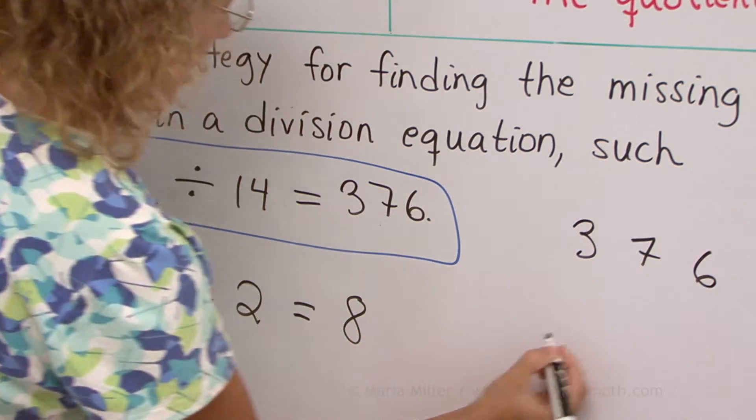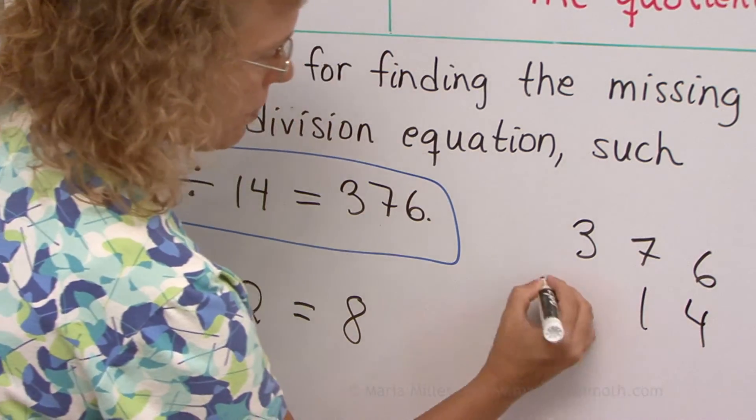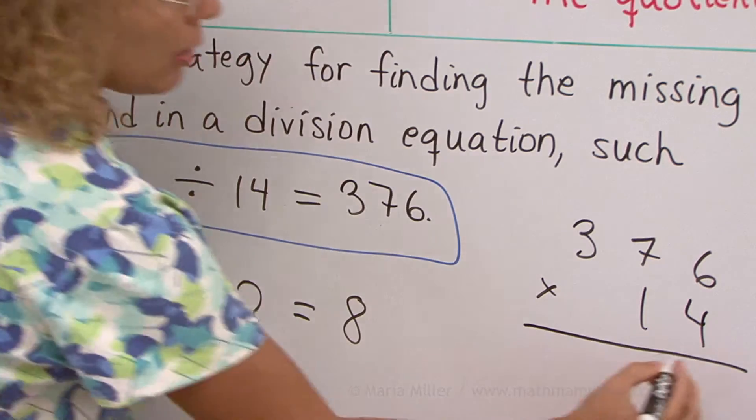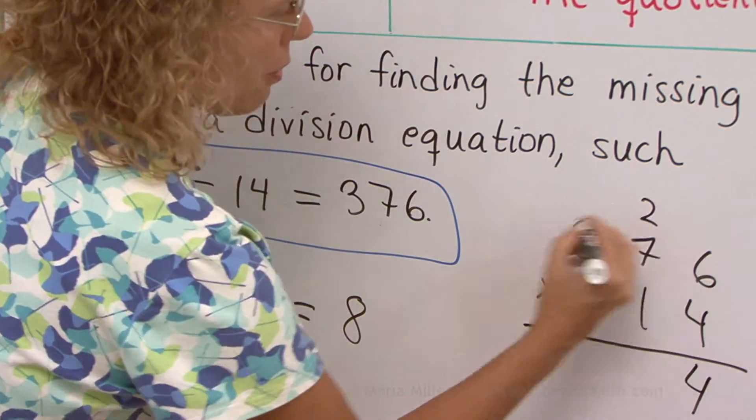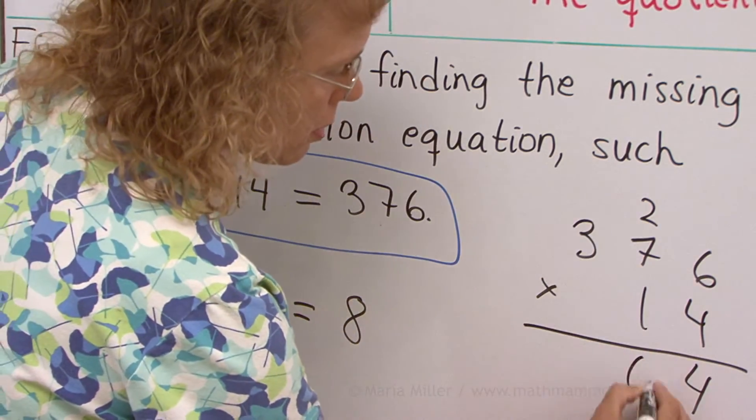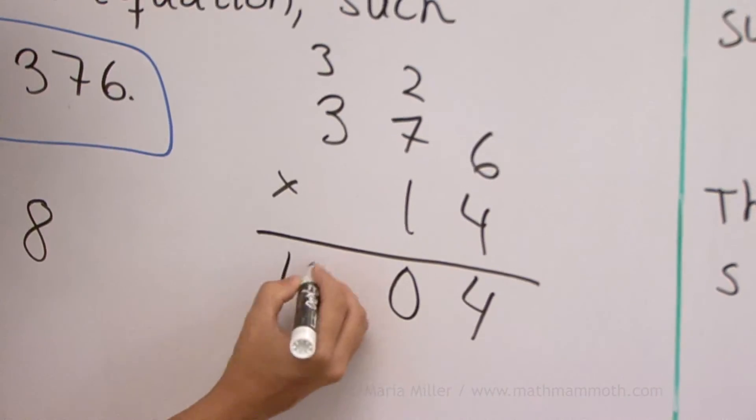So, 3, 7, 6 times 14. 4 times 6 is 24. And then 28 plus 2 is 30. And then 12 plus 3 is 15.